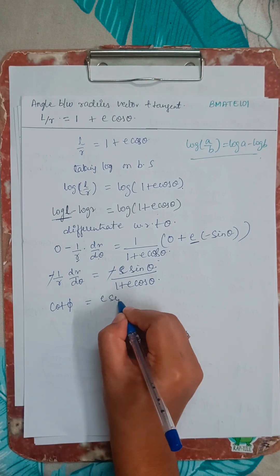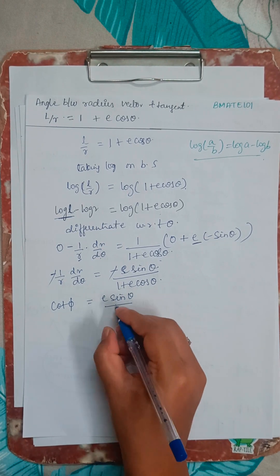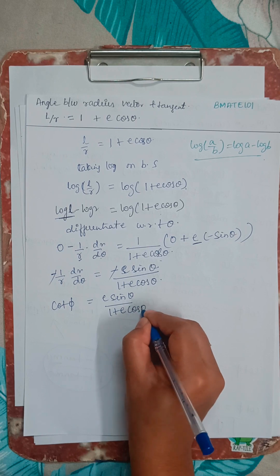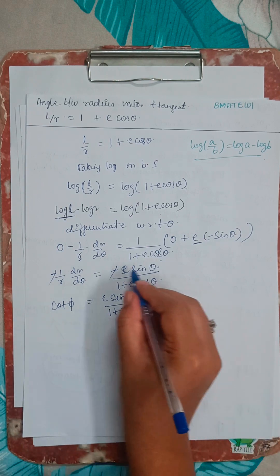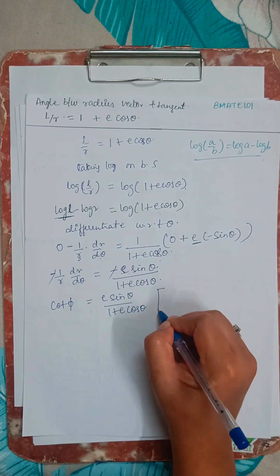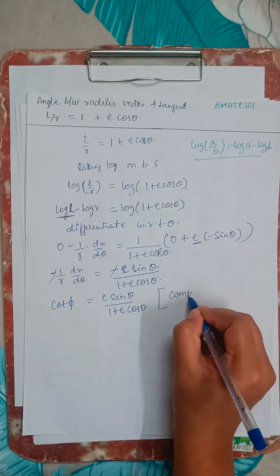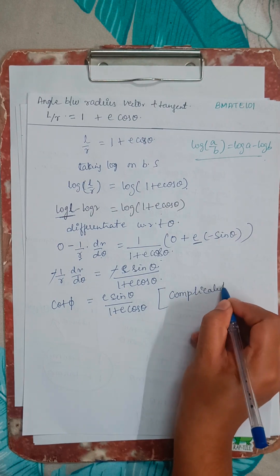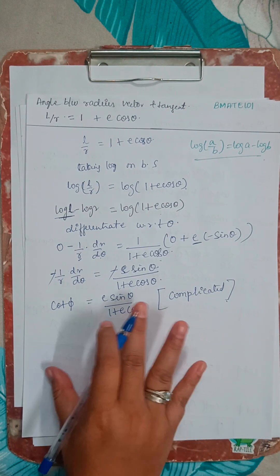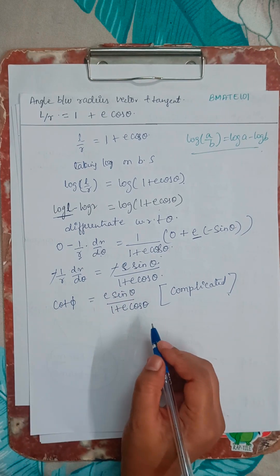So E sin theta divided by 1 plus E cos theta. To simplify this, it is very much complicated. So when it becomes more complicated, what we will do, we will write in terms of tan.